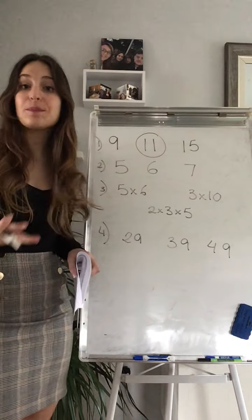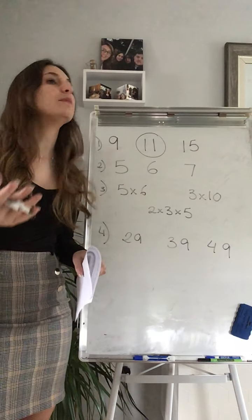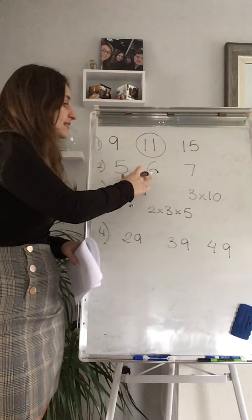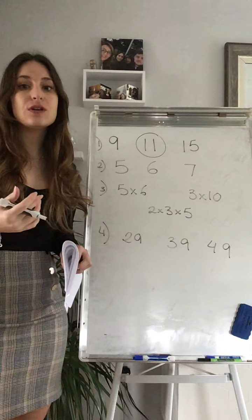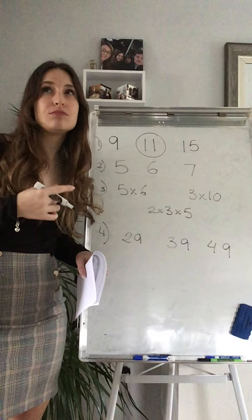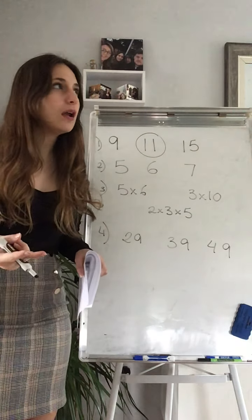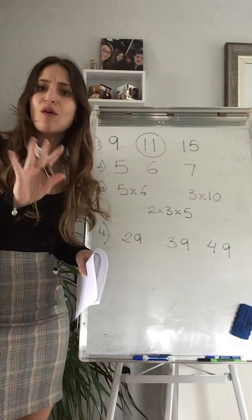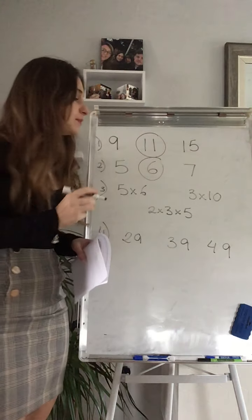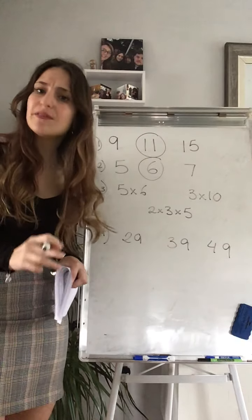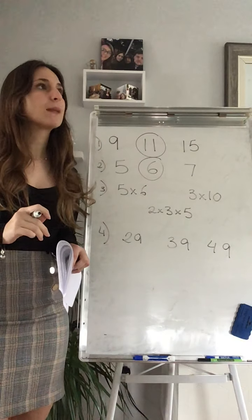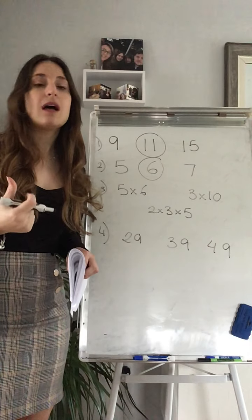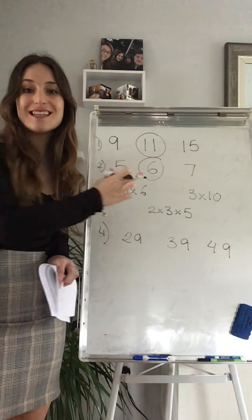5 is a prime number because you can only get it by dividing it by 1 and by 5. 6? 6 you can divide it by 2, by 1, by 3, by 6. At the minute it's 4 factors. So this is a composite number. What happened with 7? 7 you can divide it by 1 and by 7. So my answer is B.